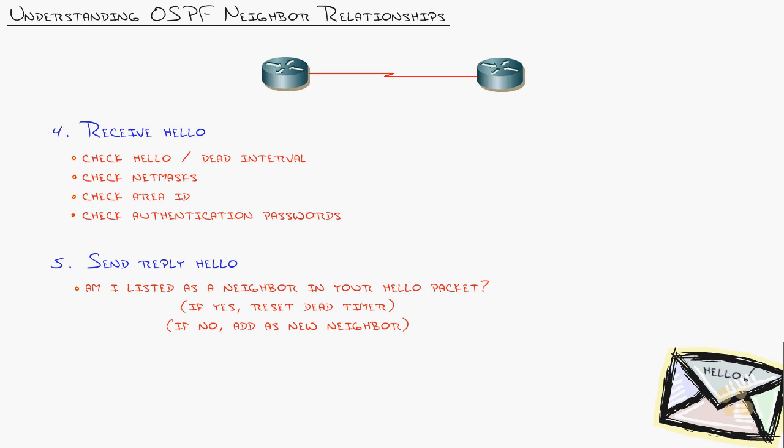Router 2 receives the hello and checks it out, ripping open that envelope. Are we compatible? Let's see: hello and dead timers, good. Subnet mask, good. Area ID, good. Password, good. We are compatible. If any one is wrong - say the hello timer is 9 seconds on one side and 10 on the other - it won't happen. You'll see the neighbor show up and disappear when you do show IP OSPF neighbor. You need to compare both sides to ensure they're set exactly the same.